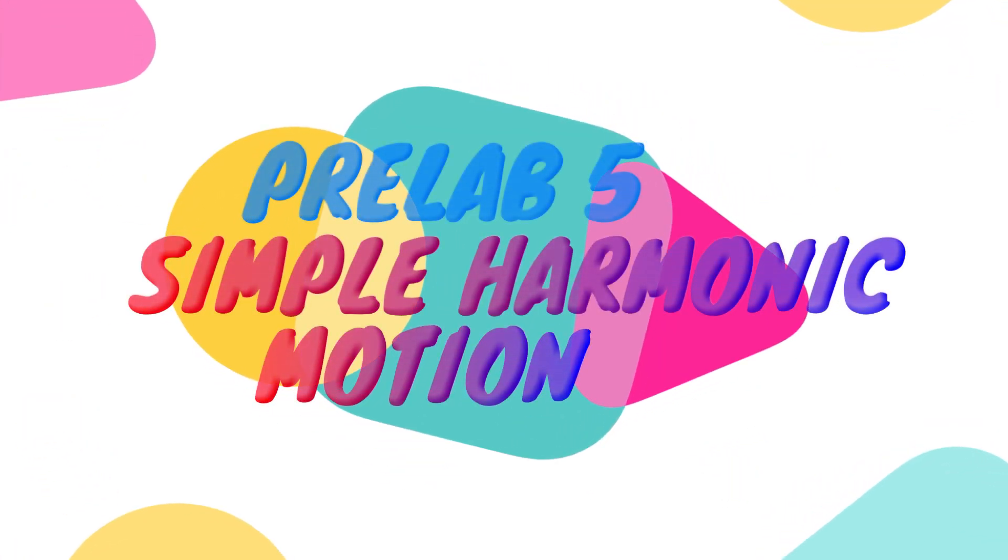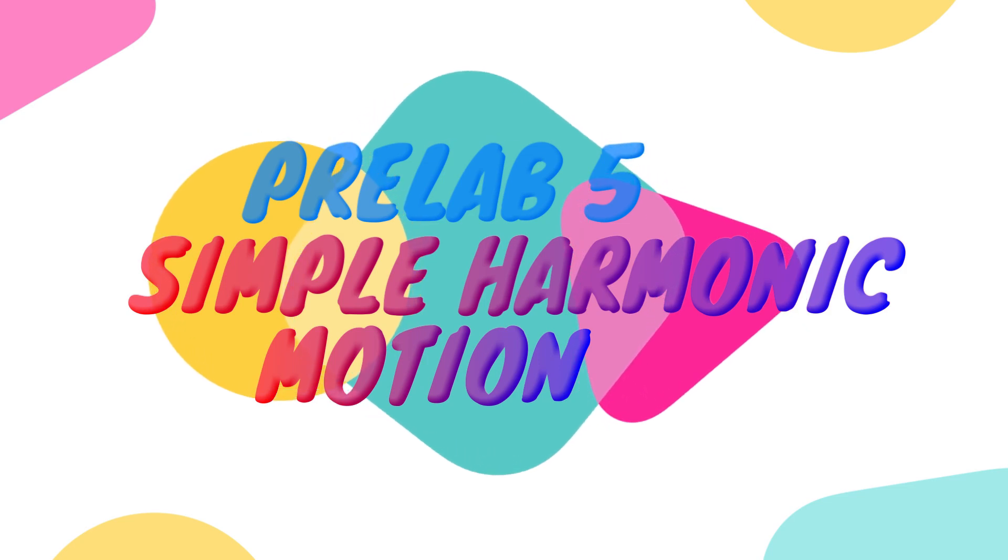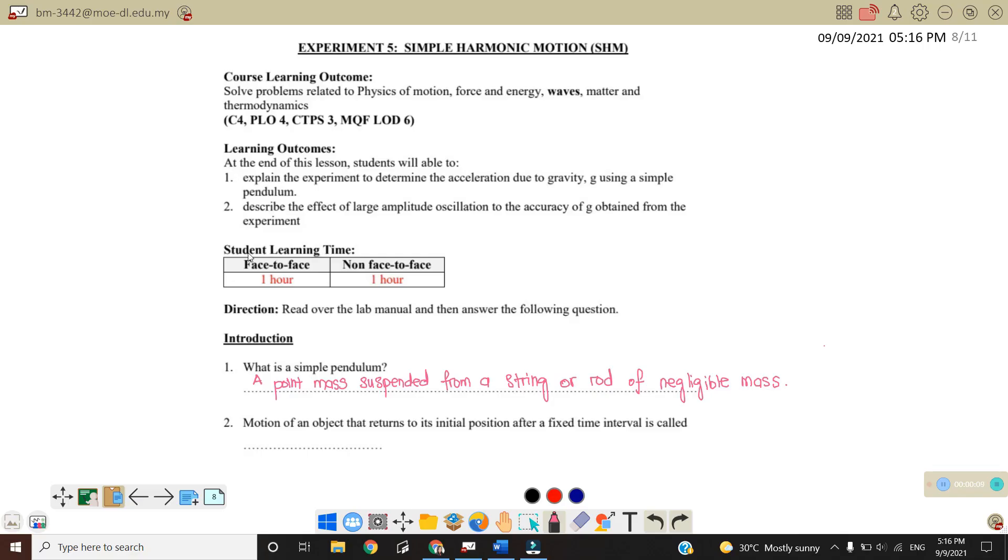Okay, welcome back to my channel. So for this video, we are going to discuss Pre-Lab 5 Simple Harmonic Motion, SHM. So the learning outcome is at the end of this lesson, students will be able to explain the experiment to determine the acceleration due to gravity using simple pendulum and describe the effect of large amplitude oscillations to accuracy of G obtained from the experiment.